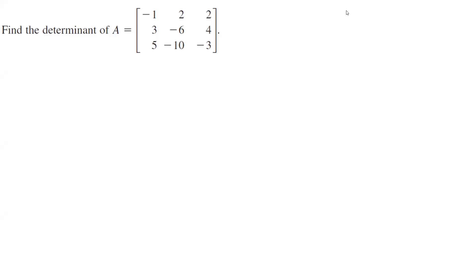Let us take a look at this interesting case. We have a 3 by 3 matrix. I want you to pay close attention to the first and second column. They are multiples of each other: negative 1, 3, 5, and 2, negative 6, and negative 10.